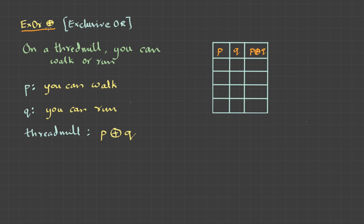Exclusive OR is represented by a circle with a plus sign in between. To formulate the table, let's take the same example. On a treadmill, you can either walk or run — using 'either...or' avoids confusion and ambiguity. So if I put it into propositions: P — you can walk; Q — you can run. And the treadmill action is P exclusive OR Q.